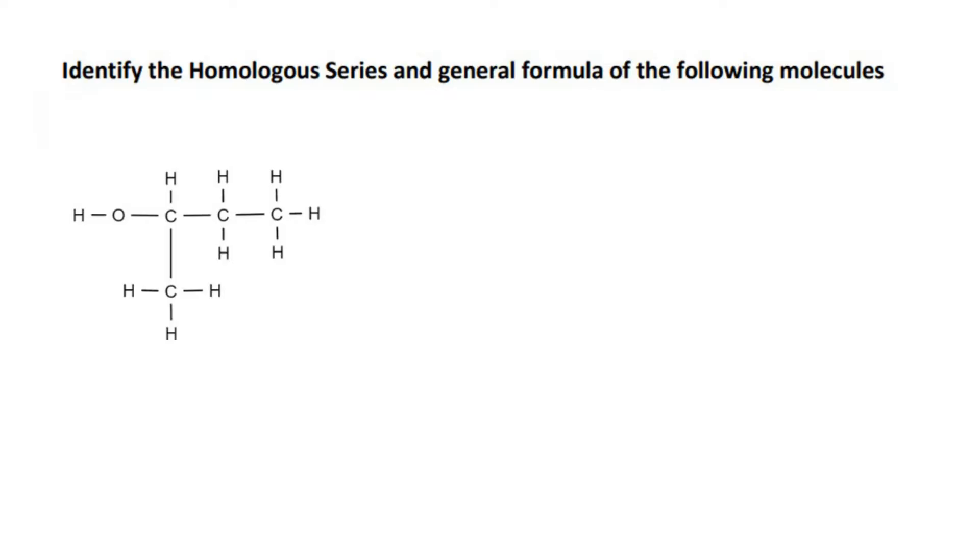With the homologous series, I mean it could be a carboxylic acid, an ester, aldehyde, alkane. So the first thing that I notice is that it has this OH. Now, there are different types of molecules that have OHs. We've got carboxylic acids that have OHs. What else? We've got alcohols.